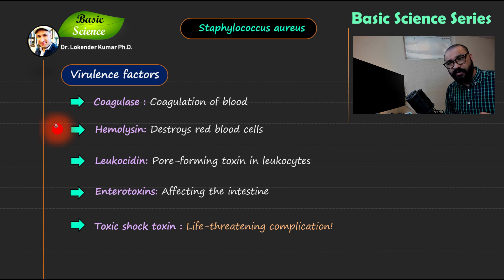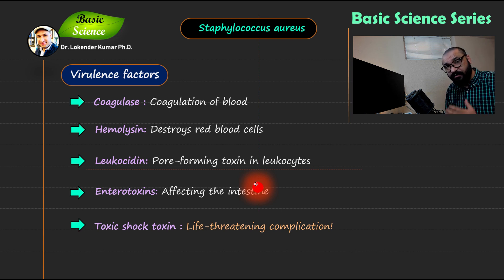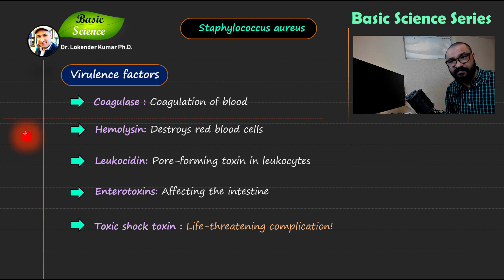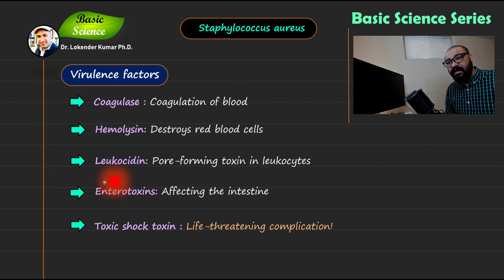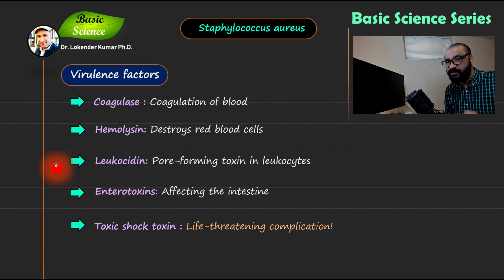The second virulence factor is hemolysin, which destroys red blood cells to acquire nutrients from the human host. Third, leukocidins are responsible for pore formation in leukocytes — the immune cells that defend the body from pathogens. Staphylococcus aureus developed this strategy to destroy leukocytes, making it an important virulence factor. Additional virulence factors include enterotoxin, responsible for intestinal complications, and toxic shock syndrome toxin, a potent toxin that can induce life-threatening complications.